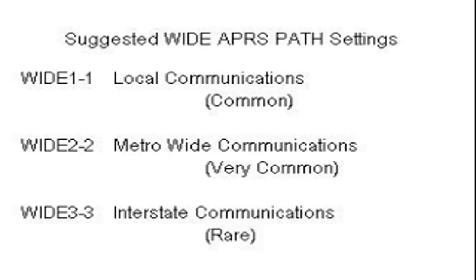Finally, at the third wide digipeater the message is sent one last time. The final digit becomes an asterisk to signify there are no remaining hops. As you can imagine, with each hop the coverage area expands. Normally you wouldn't need to set your station with three hops unless you need to go a long distance, such as across the state. A wide two by two is a good general setting to start with.